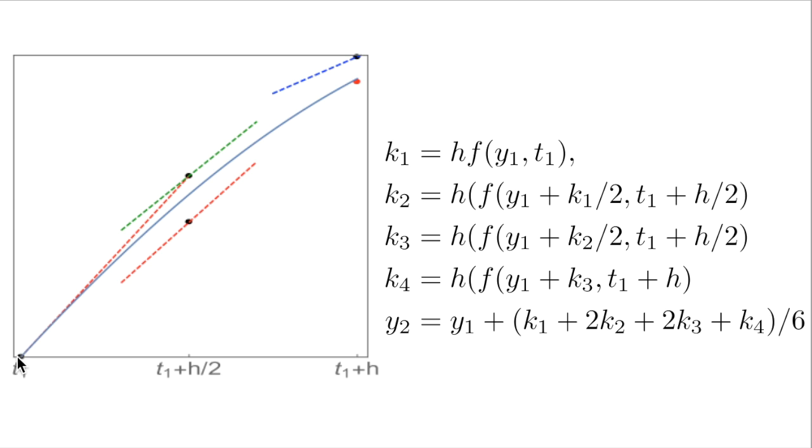So what we do instead of that, we take half a step. So we follow the red dotted line until the midpoint, t1 plus h over 2, we see we're somewhat off the line, and we calculate actually the derivative over there. Then we say, ooh, we could actually have worked with the derivative at the midpoint and worked out instead what happens over there.